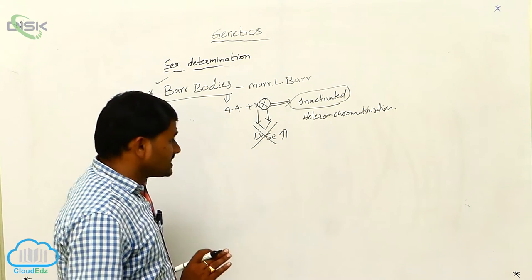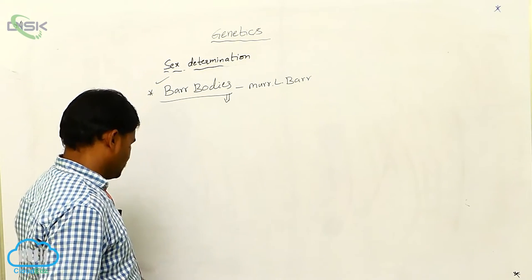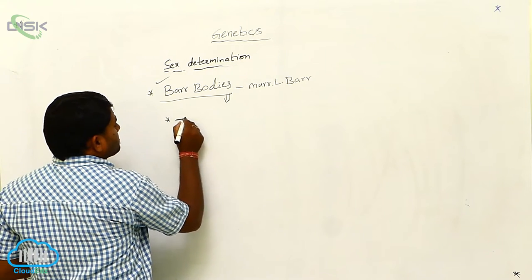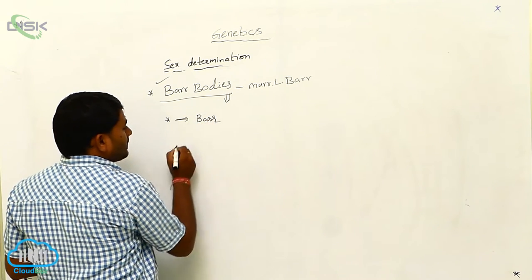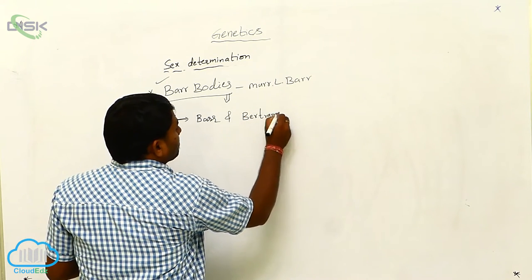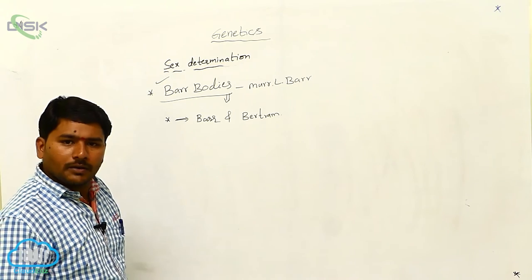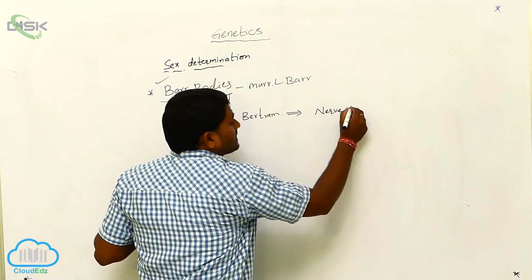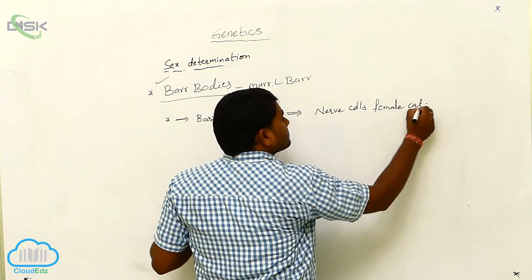Let us see what is the history of bar bodies discovery. Bar bodies were first observed by Bar and Bertram. Bar and Bertram observed a special kind of structure in the nerve cells of female cat that was not present in the male.